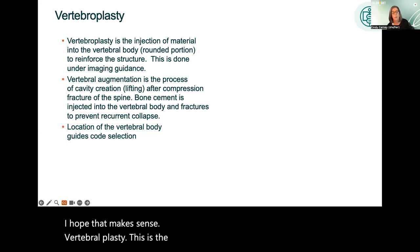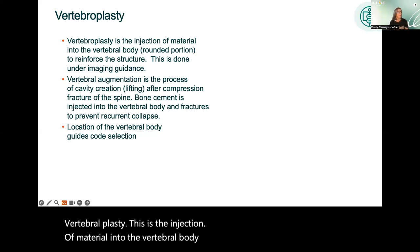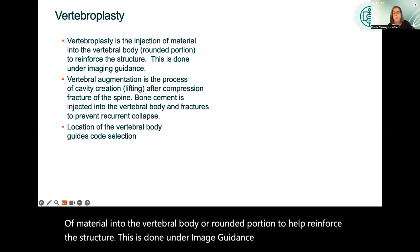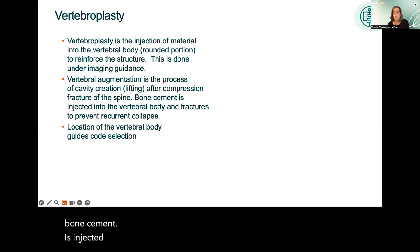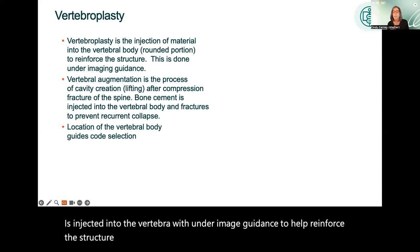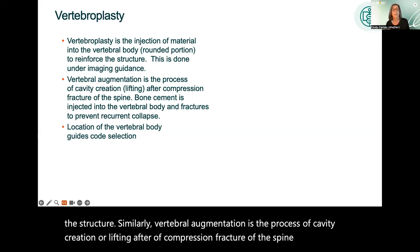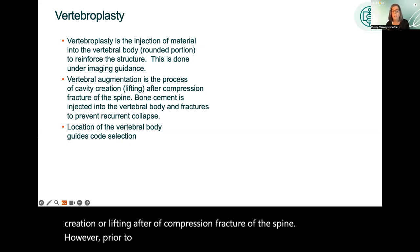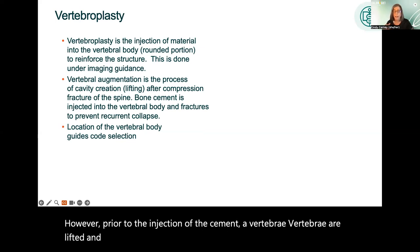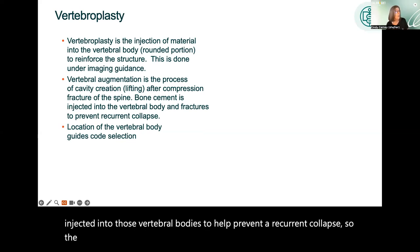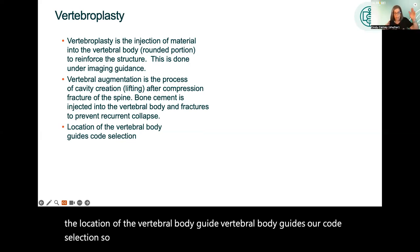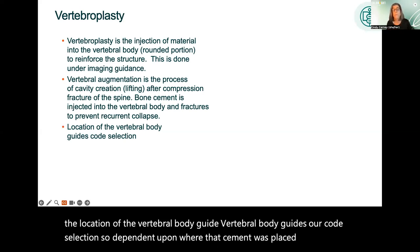Vertebroplasty is the injection of material into the vertebral body to help reinforce the structure, done under image guidance. A bone cement is injected into the vertebrae to help reinforce a fractured vertebra. Vertebral augmentation involves cavity creation or lifting after a compression fracture of the spine — the vertebrae are lifted and separated to create a cavity, placed back into normal anatomical position, and bone cement is injected into those vertebral bodies to help prevent a recurrent collapse. The location of the vertebral body guides code selection.